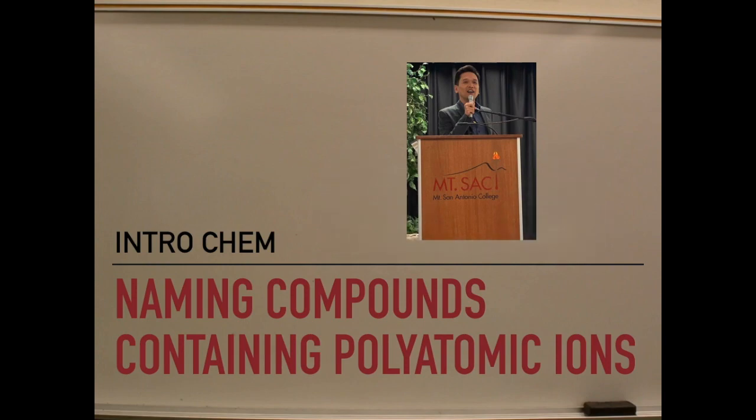Moving on to our last category of ionic compound is when the ionic compound involves something called polyatomic ions. Everything we talked about before this point, the ions in those examples are called monatomic. Mono meaning one, and now in this section we will talk about polyatomic, poly meaning many.